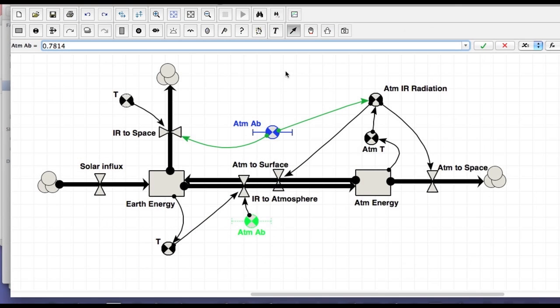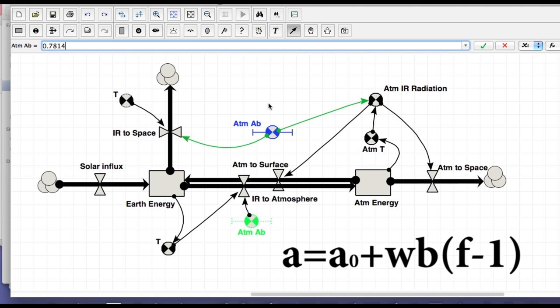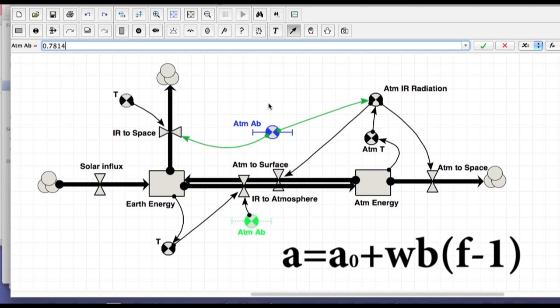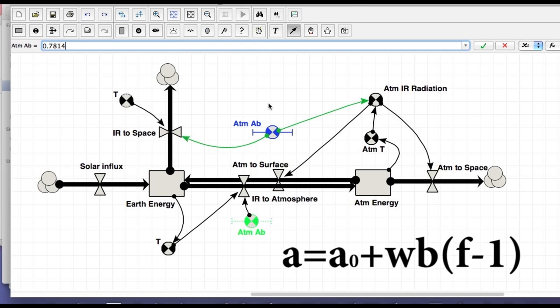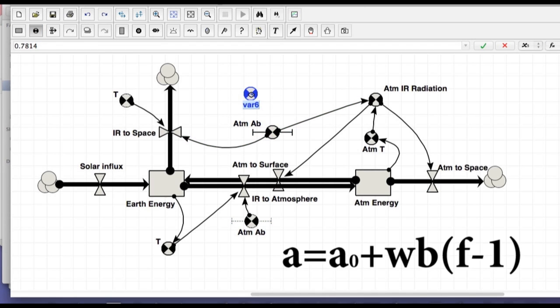So the equation of interest that we're going to use here to calculate the new atmospheric absorption when we change the greenhouse gases is that the new atmospheric absorption is equal to that original atmospheric absorption that we calculated before, the 0.7814, plus W which is a water feedback factor, times B which is a calibration constant which we get by comparing our model to more sophisticated global circulation models. So that takes a lot of information and then we are ready to take in right now. That is times F-1 and F is the forcing agent and that's basically our CO2 forcing, our greenhouse gas, a direct forcing here. So we know we're going to need, in this case, a W, we're going to need a B and we're going to need an F.